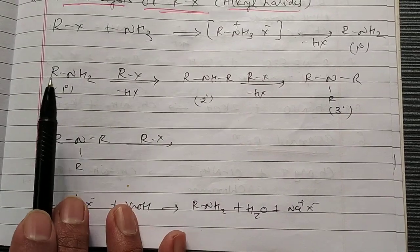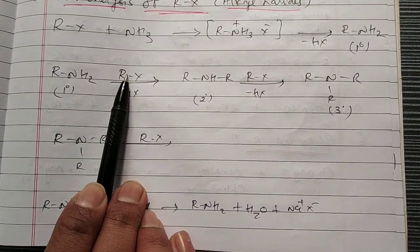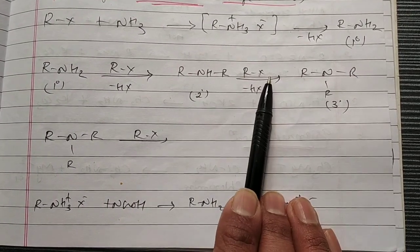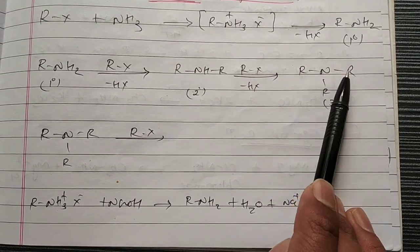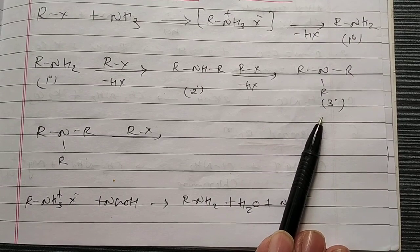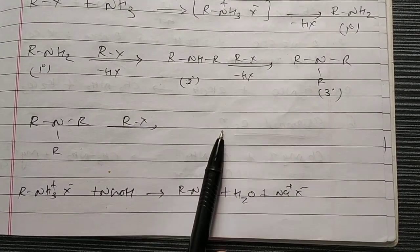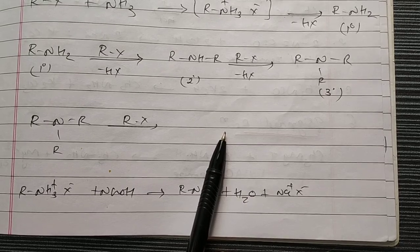So next, substitution takes place. RNH2, one more mole of Rx, we get R-NH-R, that is secondary amine. One more mole of Rx, we get R-N-R-R, that is tertiary amine. If tertiary amine is further treated with Rx, we get product or not? That is a huge question.